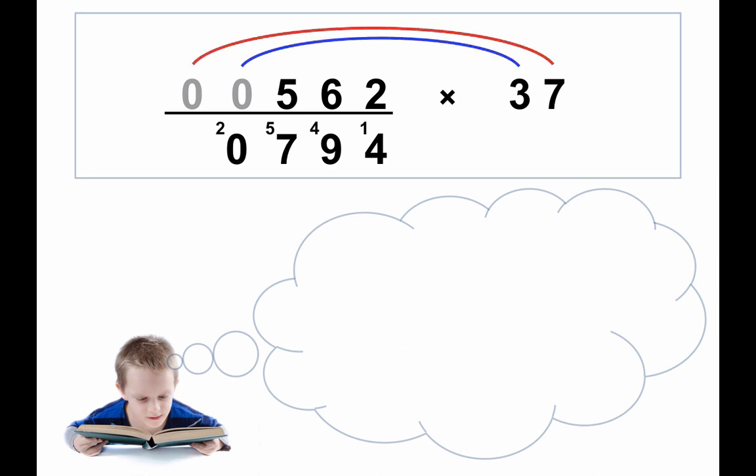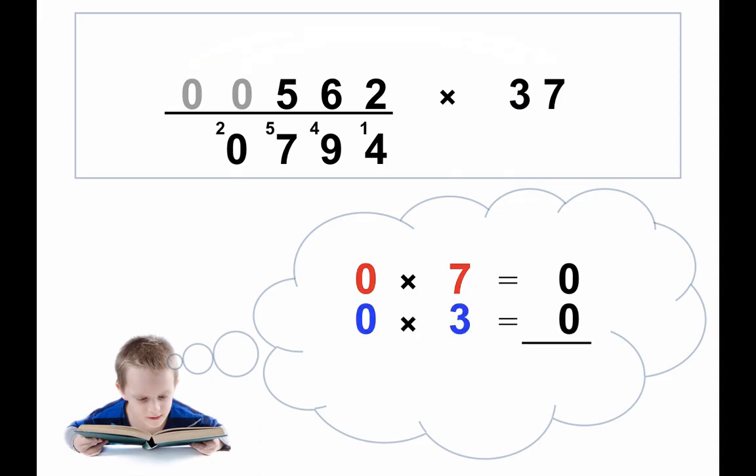Then the final step. We have 0 times 7 is 0. We have 0 times 3, which is 0. But we have the 2 from the carry, so we have 2. So we write down the 2, and there's our answer, 20,794.